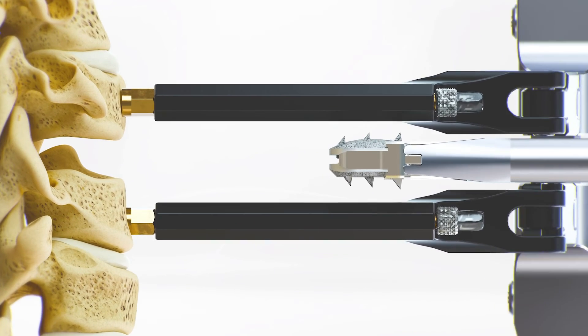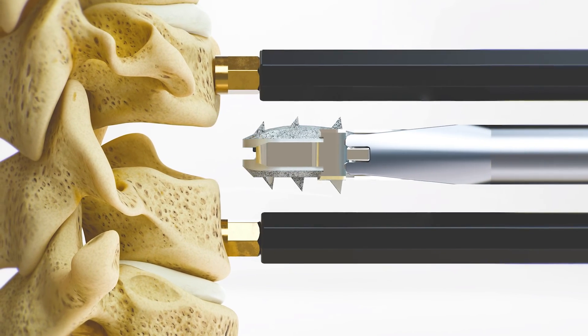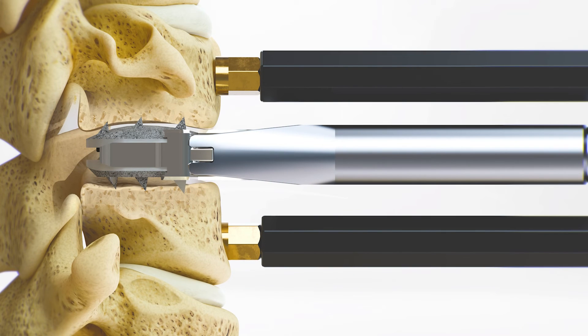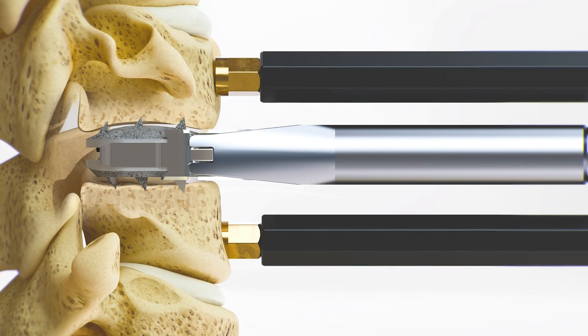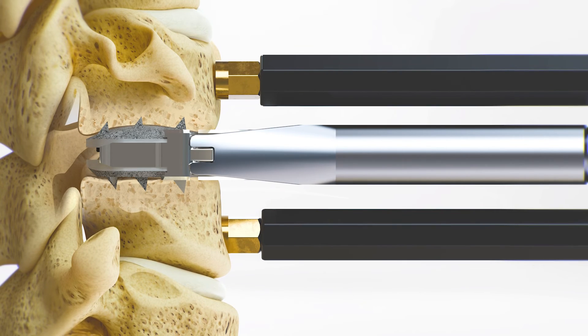The implant is inserted on block into the disc space. Once the correct position of the implant is confirmed under fluoroscopy, release the retainer and apply slight compression with the retainer. Slight compression from the retainer will help the spikes on the implant to penetrate into the vertebral bodies.